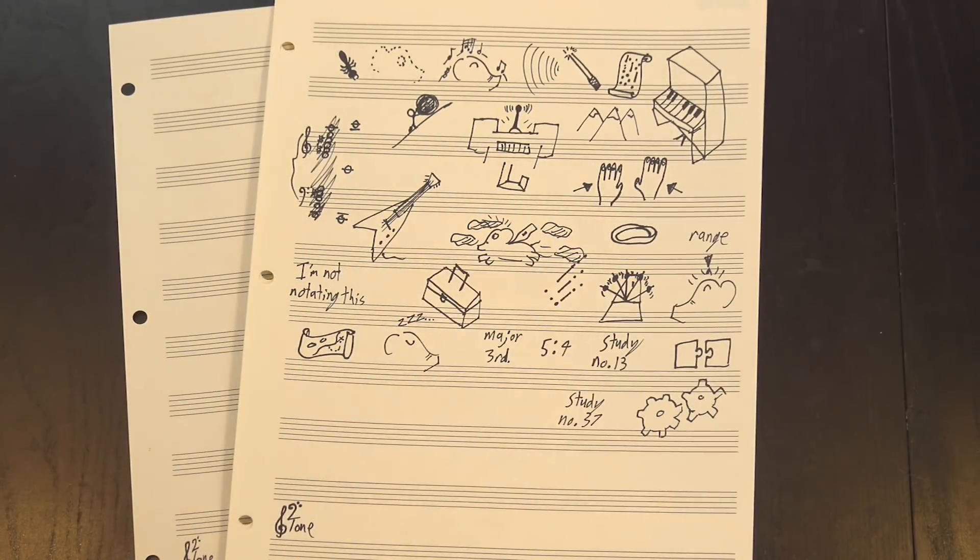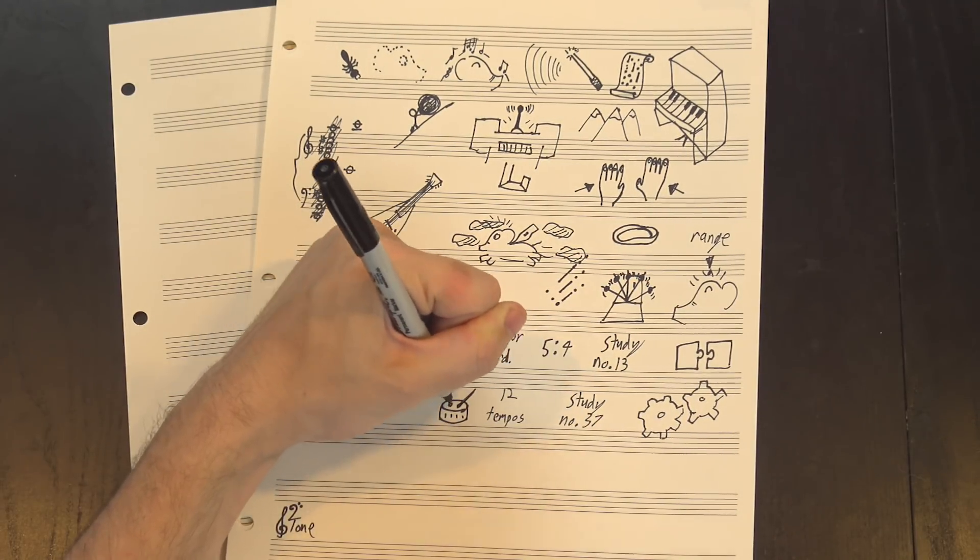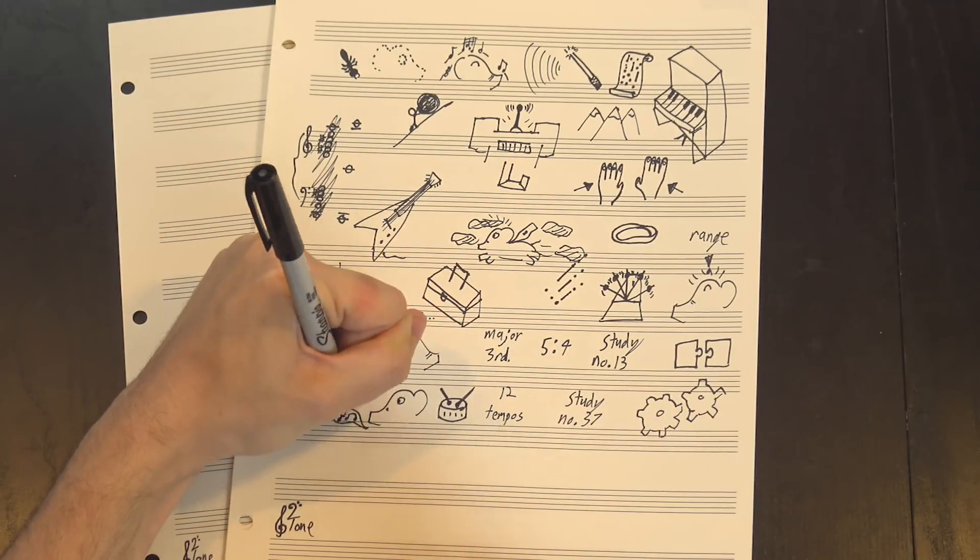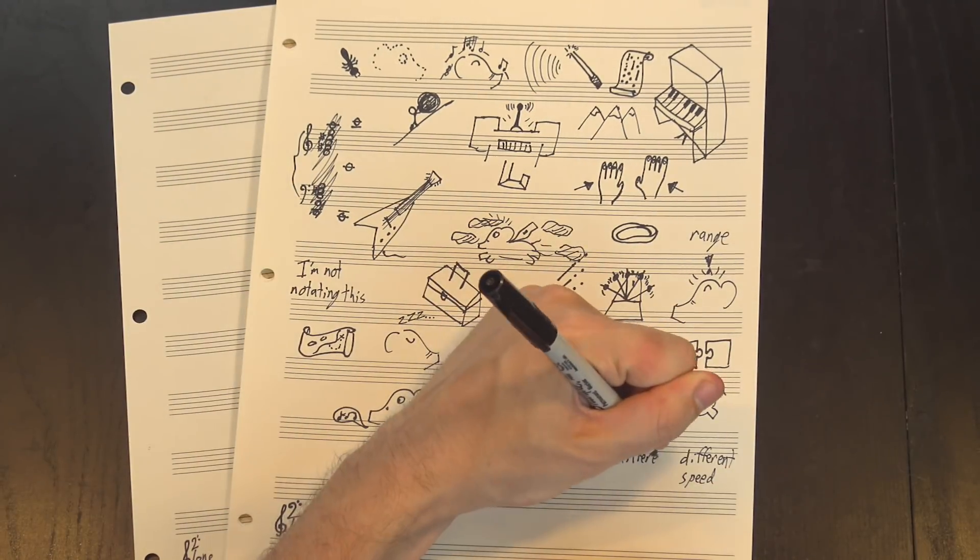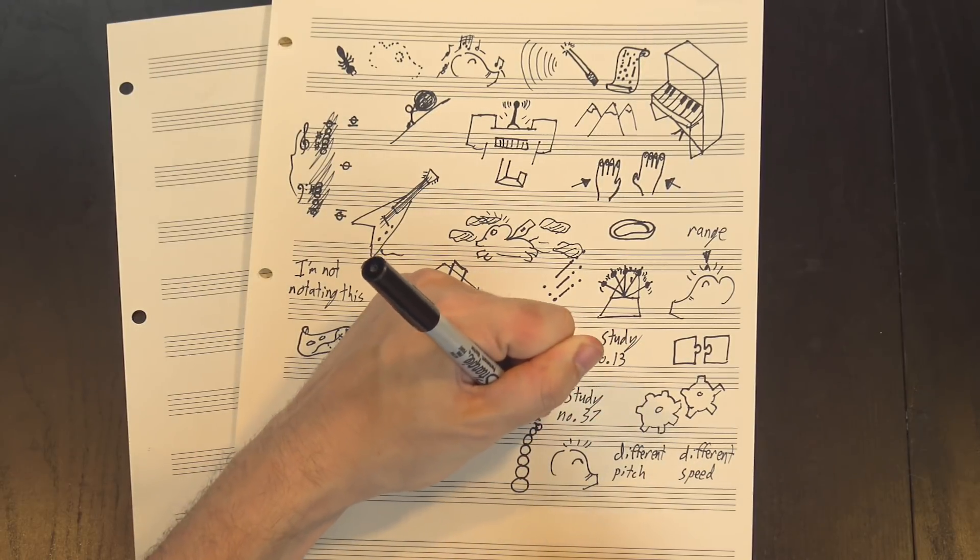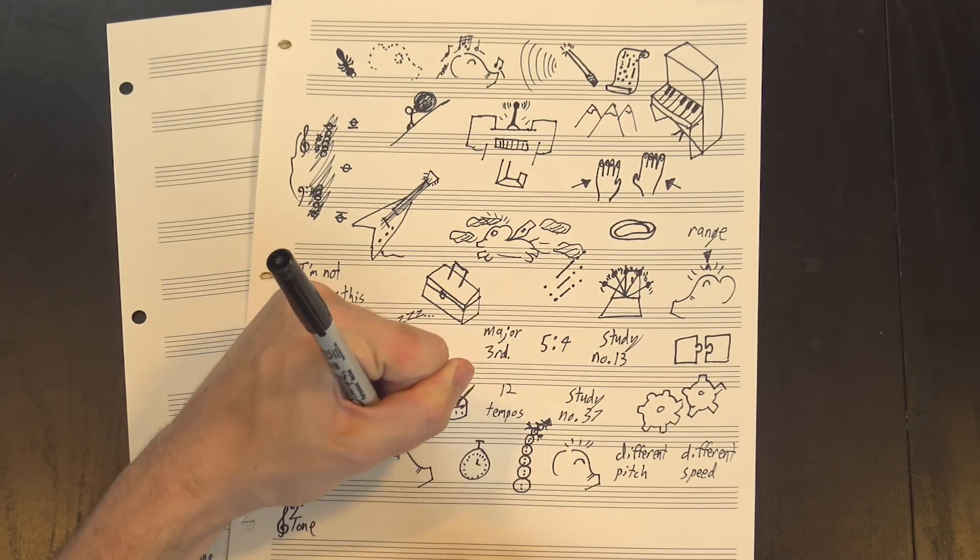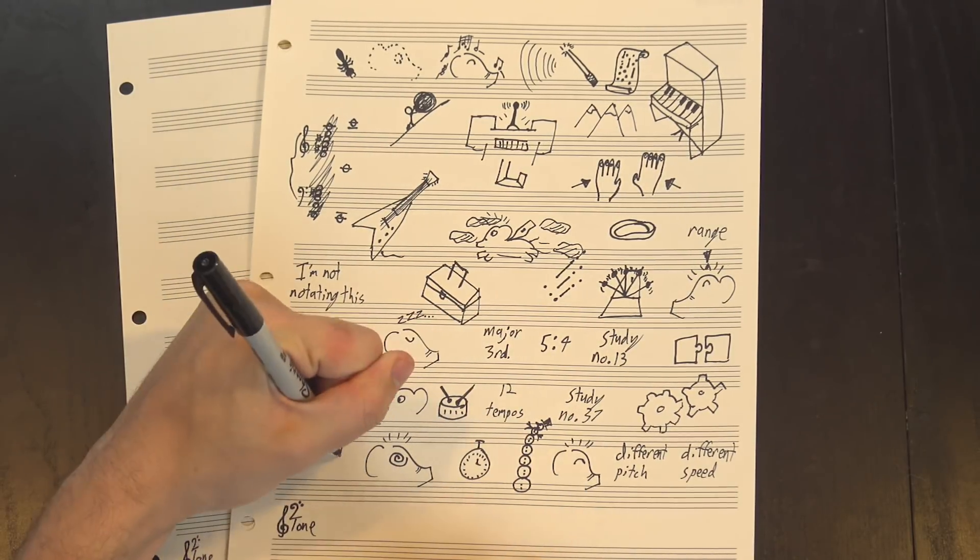His study number 37, for instance, has 12 different tempos, each representing a different note of Cowell's tempo scale. Each voice plays the same basic melody but at a different speed and starting on a different note. This creates a somewhat surprising effect, where at first it feels like you're hearing a single chord across all the voices, and then as they drift further and further apart in time, it starts to sound more and more chaotic. If you want to check that out, I put a link in the description.